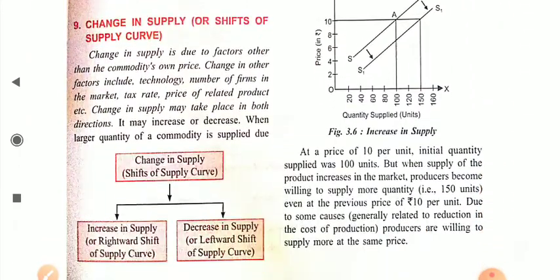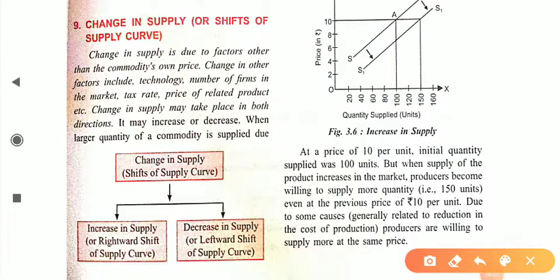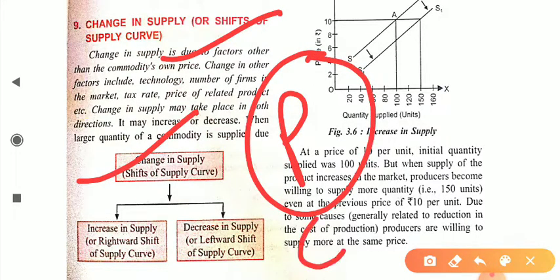Now let us move to change in supply. Change in supply, or shift in supply, is an important concept. Always keep in mind: movement along the supply curve is because of price — extension and contraction are because of price. But whenever we talk about a shift, the shift is because of all other factors except price. In the case of a shift, your price remains constant.